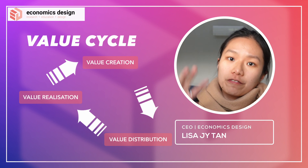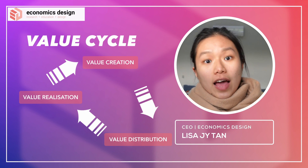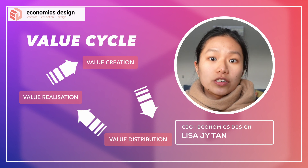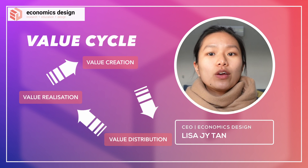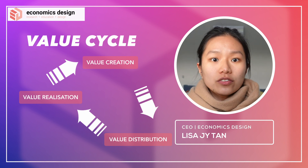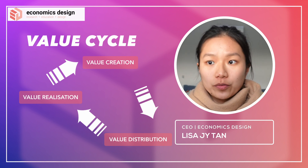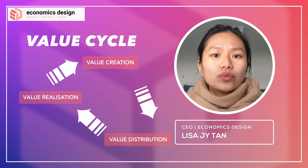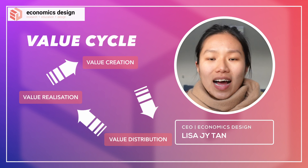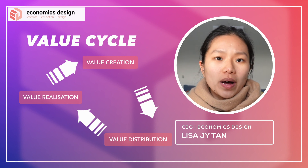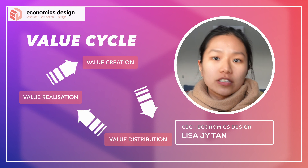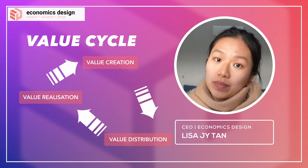How does the value cycle work? First, you have value being created, then value being distributed to the different people in the game, and then value will be realized. Once value is realized, you have more capital to create more value. The long story short of anything we're doing in token economics is that it's all about understanding value — how value is being created, distributed, and realized.